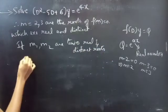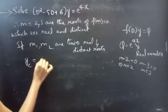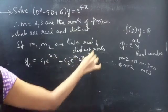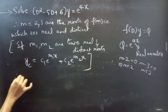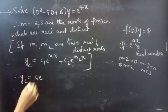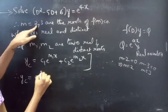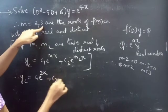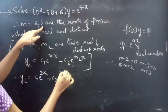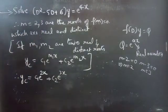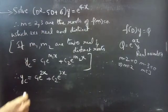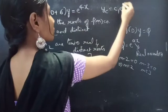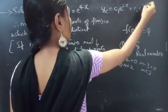We know that if m₁ and m₂ are two real and distinct roots, then the complementary function yc is given by: yc = c₁e^(m₁x) + c₂e^(m₂x). Substituting m₁ = 2 and m₂ = 3, we get yc = c₁e^(2x) + c₂e^(3x).